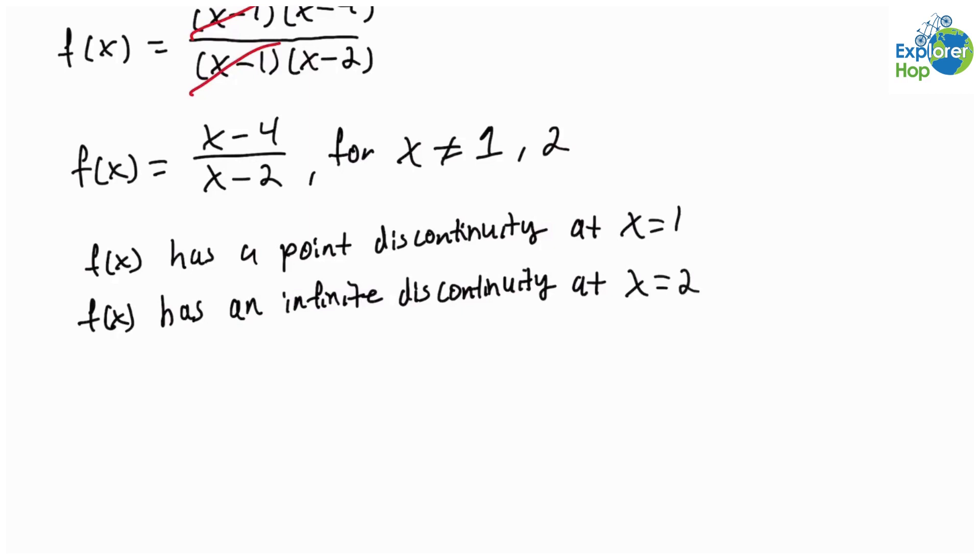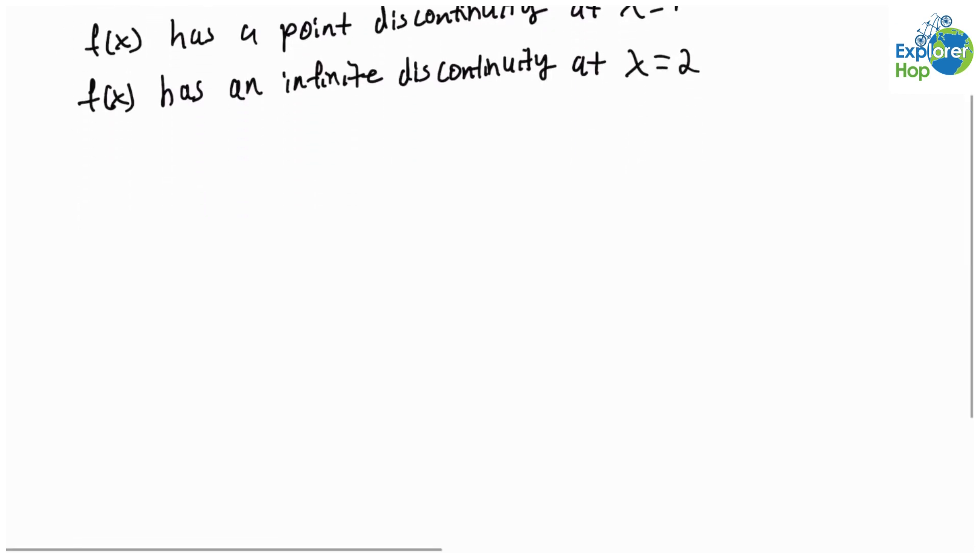Now, in order to redefine the function so that the function is continuous at x equals 1, we want f(1) to be equal to the limit as x approaches 1 in our function f(x), so that it satisfies the definition of continuity.